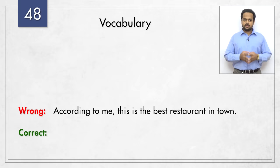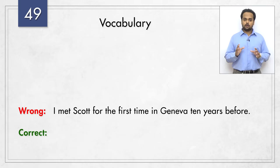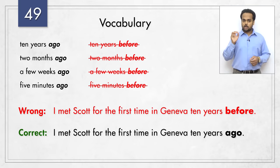Here's the next one – 'according to me, this is the best restaurant in town.' You should say 'in my opinion, this is the best restaurant in town.' You can say 'according to' when you want to give someone else's opinion. It's wrong to use it to give your own opinion. Number 49 – 'I met Scott for the first time in Geneva ten years before' – common error – it should be 'ten years ago.' When we mention an amount of time in the past, we use 'ago' and not 'before.' So you can say 'ten years ago,' 'two months ago,' 'a few weeks ago,' 'five minutes ago,' etc.